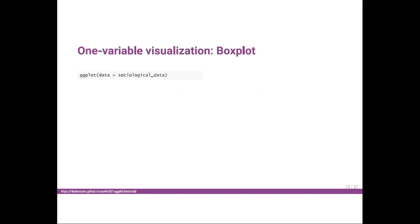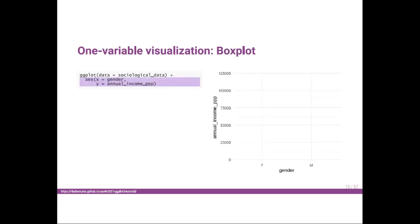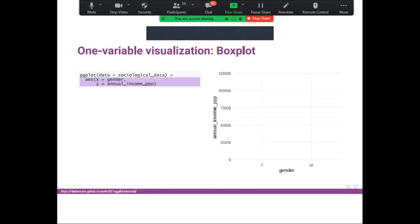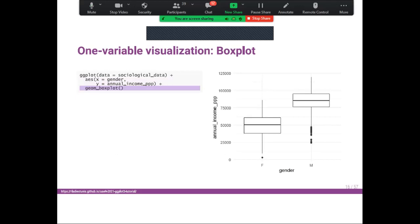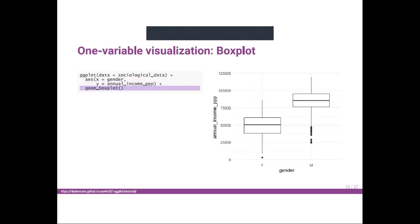Now let's create the box plot. I have the command ggplot(data = sociological_data). Every time we want to visualize something in ggplot2, we put this line, which specifies to ggplot2 the data we will use. Then in aes(), my x will be gender and my y will be annual_income_ppp. Then I add geom_boxplot() to create the box plot.